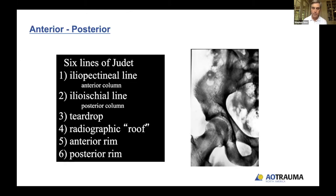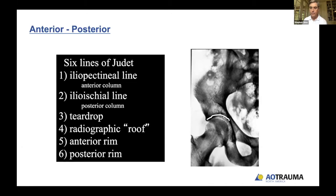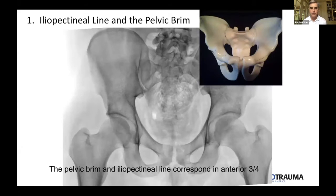Most people are familiar with the six lines: the iliopectineal line, which is an anterior column landmark; the ilioischial line, which is a posterior column landmark; the teardrop, which is a complex structure usually displaced or tilted with an anterior column or anterior wall fracture; the radiographic roof; the anterior rim of the acetabulum; and the posterior rim of the acetabulum. If you sit down and look at these on every x-ray, you can start mapping out your fractures.